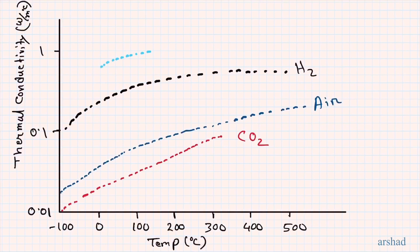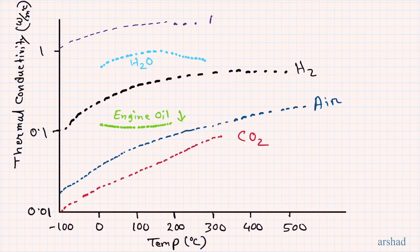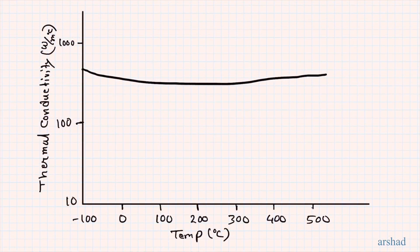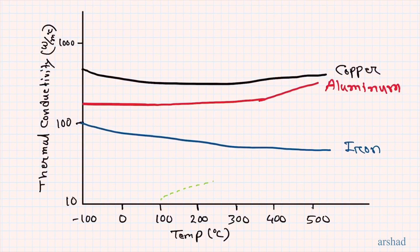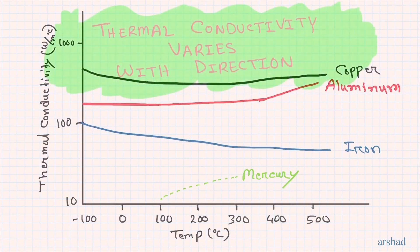Hydrogen's thermal conductivity increases but tends to flatten after about 300°C. Water shows an increase then a decrease. Engine oil decreases first then increases. Amorphous carbon has relatively high thermal conductivity. Copper shows a downward trend then recovers. Aluminum is fairly constant then increases after a certain temperature. Iron has a decreasing trend, while liquid mercury increases with temperature.